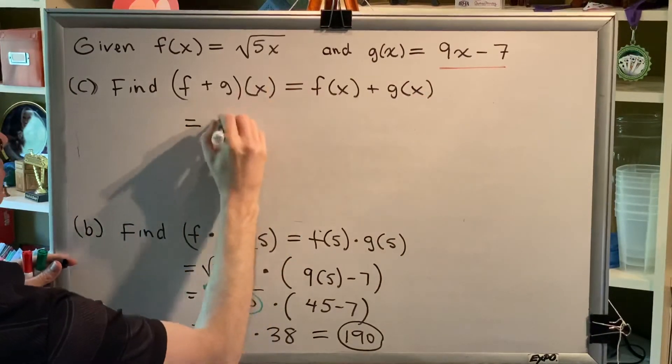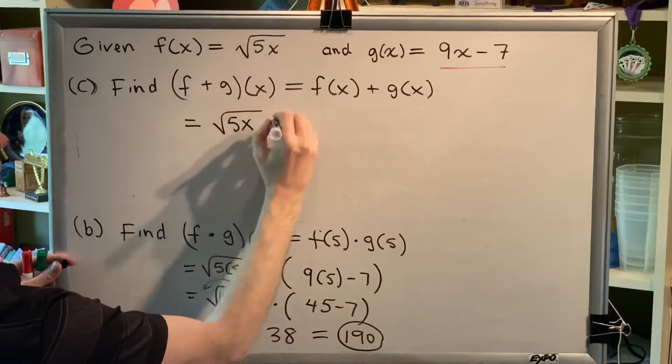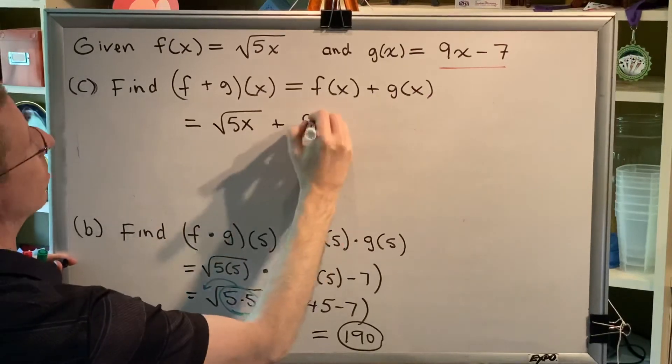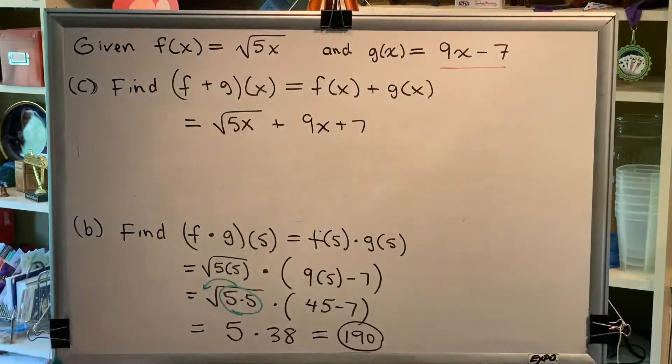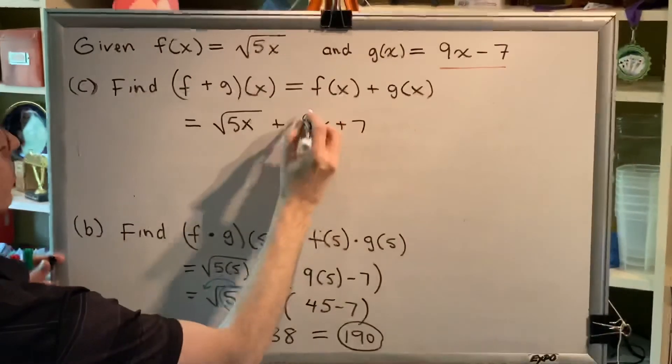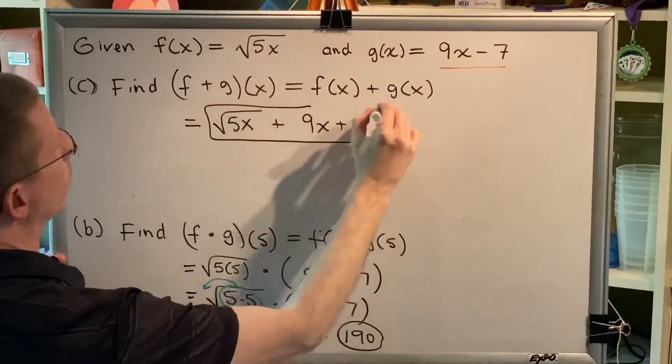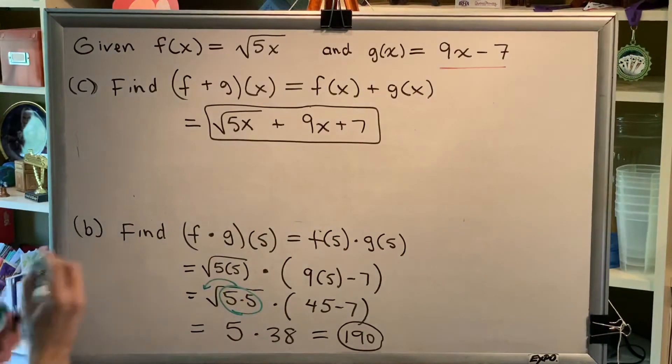Which, for this problem, f(x) is the principal square root of 5x, and g(x) is 9x plus 7. And nothing here can be combined. There are no like terms. So, this is our final answer.